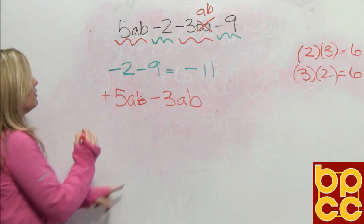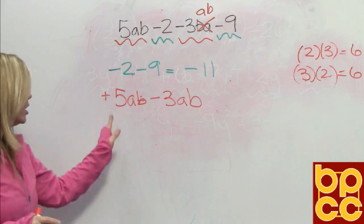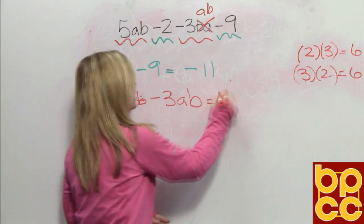5 is positive, 3 is negative. Different signs, you subtract and give the answer the sign of the larger. So 5 minus 3 is 2ab.